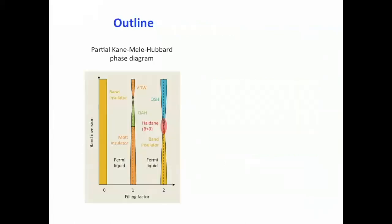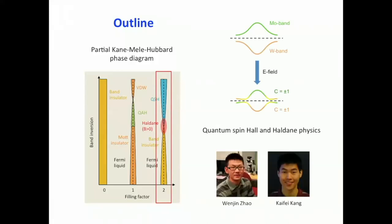This is the outline of the talk. One axis is band inversion tunable by electric field; the other axis is filling factor tunable by gate voltage. Filling factor one means one hole per moiré unit cell; two means two holes per moiré unit cell. I will mainly focus on filling factors one and two, where most regions are insulating states. I'll begin with filling factor two, where most physics is single-particle, and then move to filling factor one, where there is a lot of correlation physics.